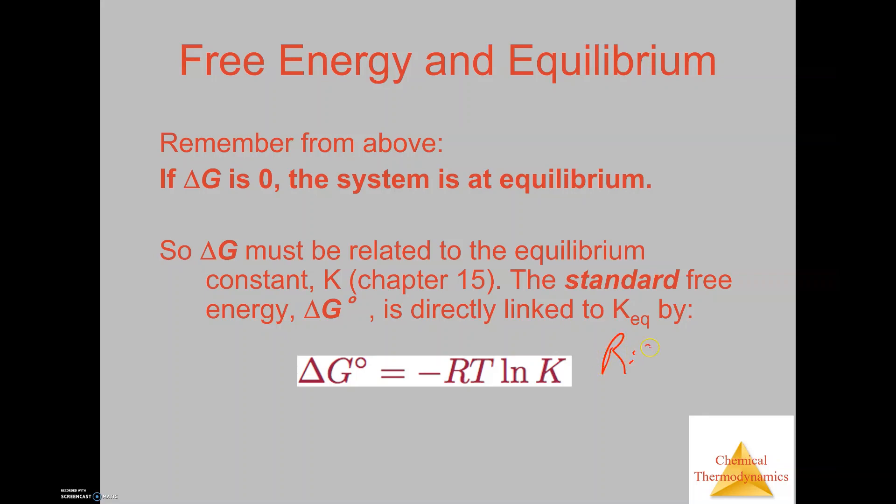Now R is 8.314 joules per mole times Kelvin, T is the temperature in Kelvin, and then natural log of K. K is the equilibrium constant that you get from the previous chapters. It could be provided to you also, or you could calculate it.